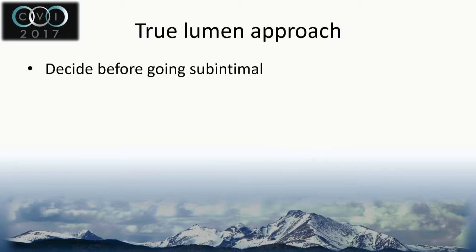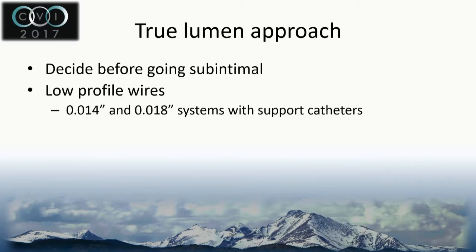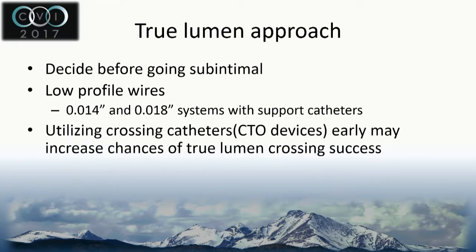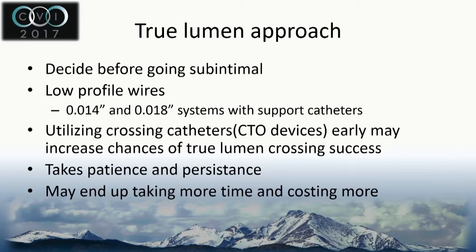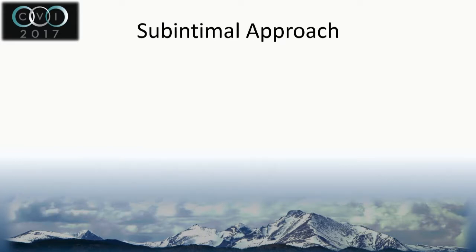If you want to do the trulumen approach, you really want to decide early before going subintimal, because if you do go subintimal, most of the time it's too late to come back with a crossing catheter — everything's going to go subintimal. Typically you're using lower profile wires, 014 and 018 systems. Using crossing catheters may increase your chance of trulumen crossing but do add cost. A trulumen approach takes patience and persistence, usually takes more time, costs more, and there's a high crossover rate into the subintimal approach.